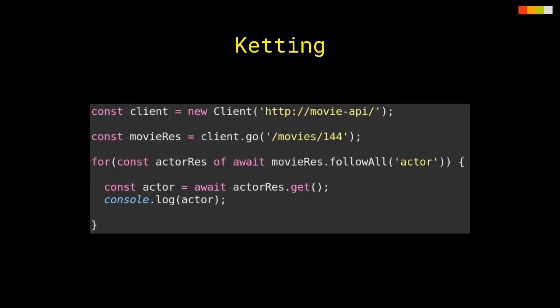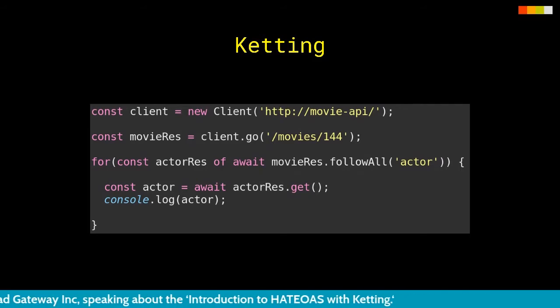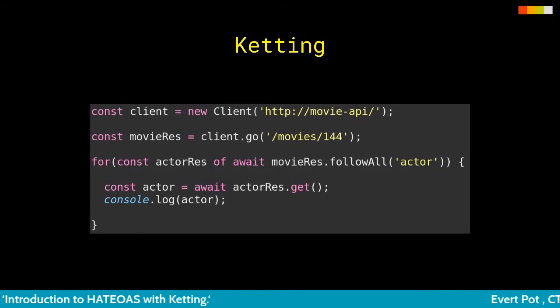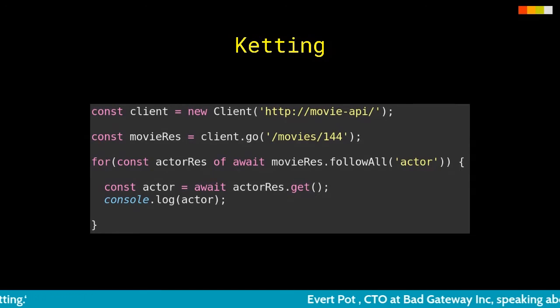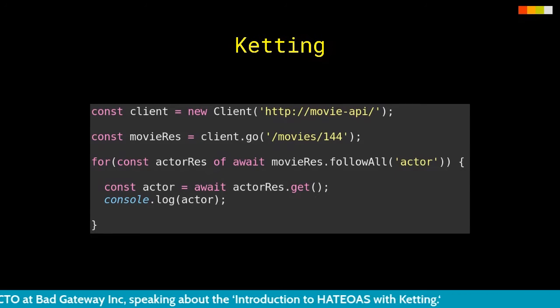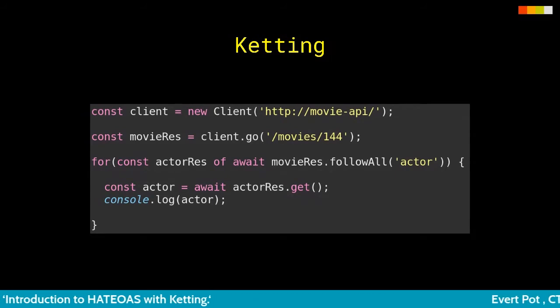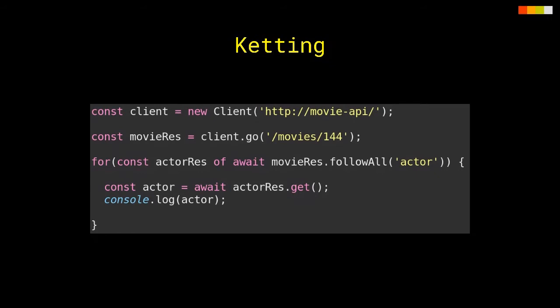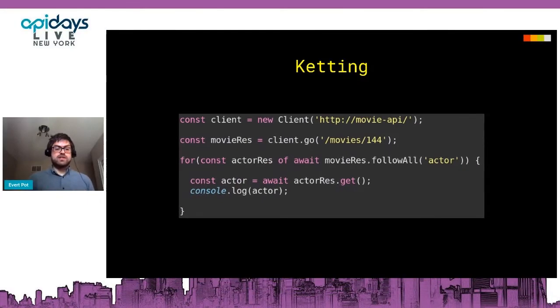This is the most fundamental way you would start working with an API. On the first line, you instantiate a client, giving it something called a bookmark URL — the starting point, also named this way in the original REST dissertation — which we use to expand all relative URLs. On the second line, we get access to a movie resource. Right now we're hard-coding this relative URL, but ideally you want to discover as much as possible. From the movie resource, we follow a list of actor links, and for each actor link we console-log it. Resources are managed as a single endpoint, and from a resource you get functions like follow, followAll, and HTTP methods like get, post, put, and so on.